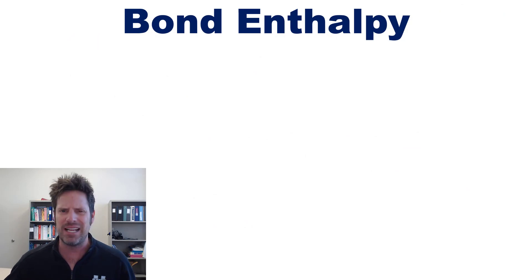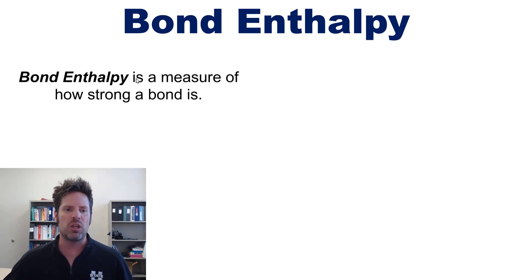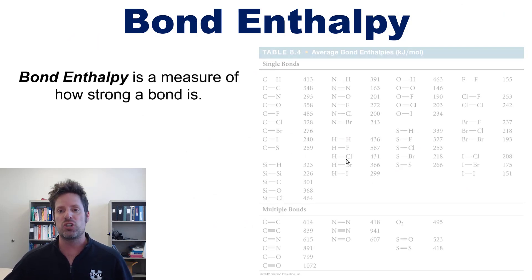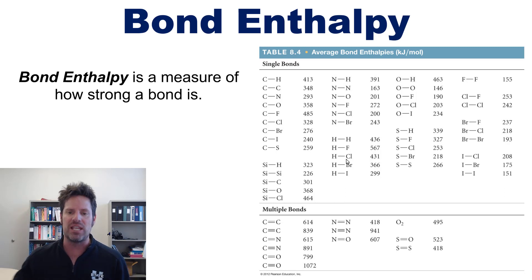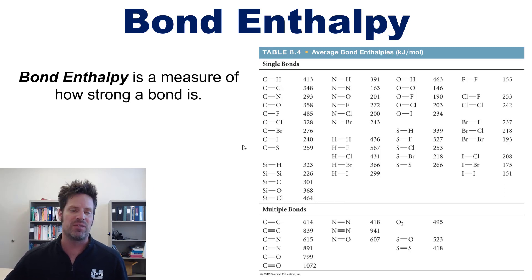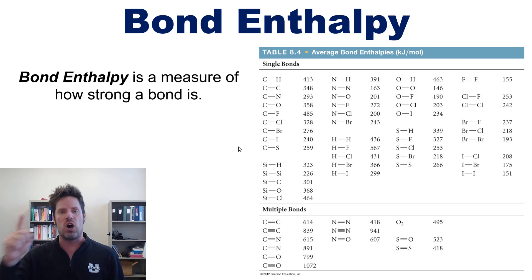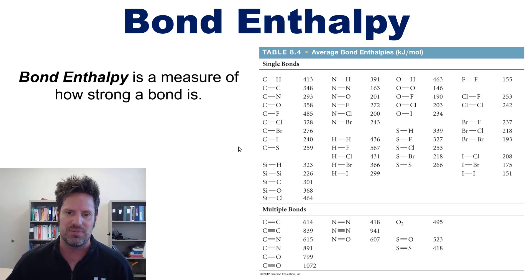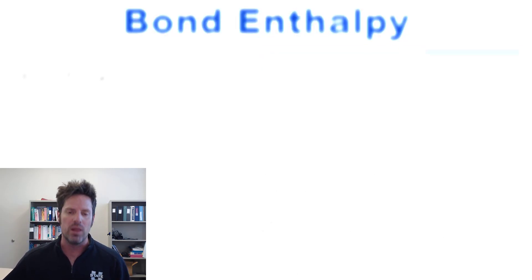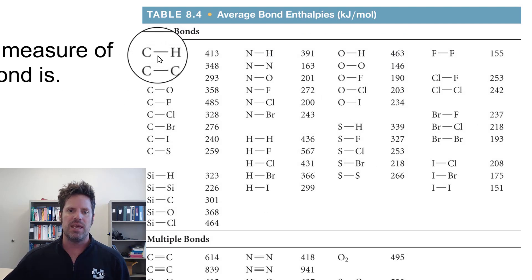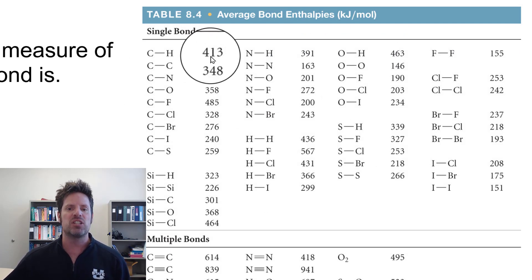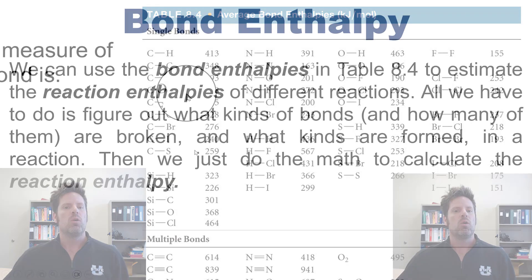So what is bond enthalpy? In this chart from our text, referenced in the description below, we see various bond enthalpies for individual bonds between many different elements. Bond enthalpy is a measure of how strong a bond is, and the units are kilojoules per mole. For example, one mole of carbon-hydrogen bonds has a bond enthalpy of 413 kilojoules.